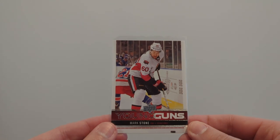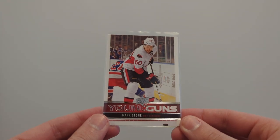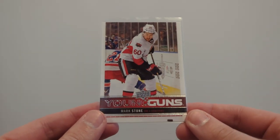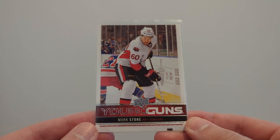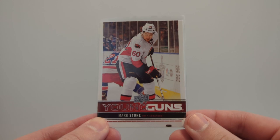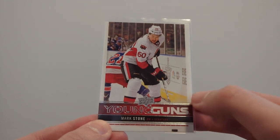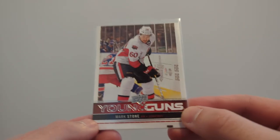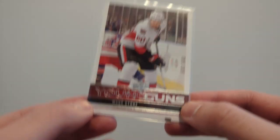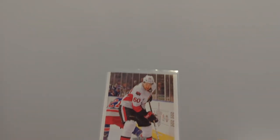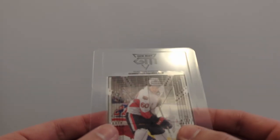I've got a Mark Stone Young Guns here. It might be a bit tough to see because I have a white wall background and the sideboards of this card are white. But if you look just with the naked eye, you can actually see it's off-centered to my left. The white border on the right side is thicker than the white border on the left side. It's not crazy off, but if you're paying attention you can tell — though there are lots of times where it's not that obvious, and that's when the centering tool really helps.